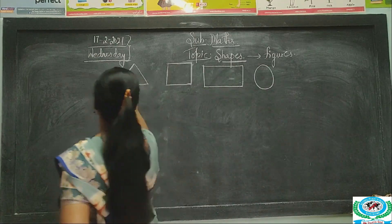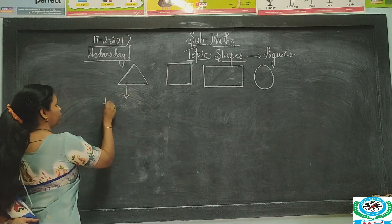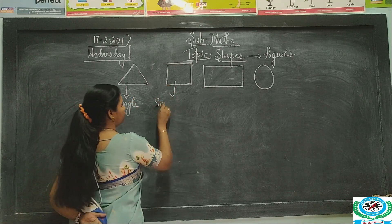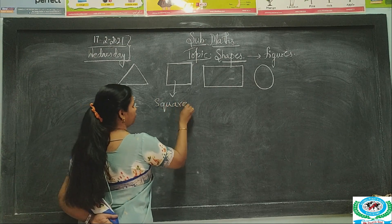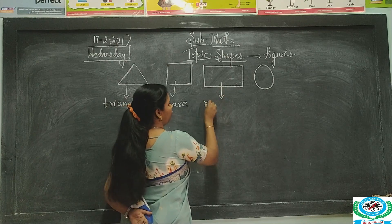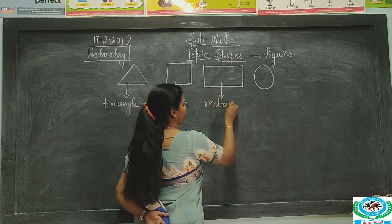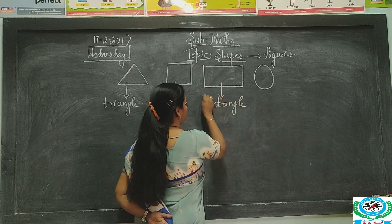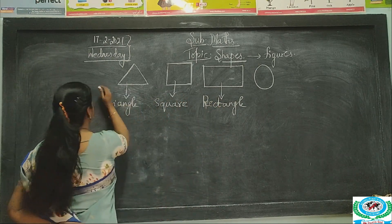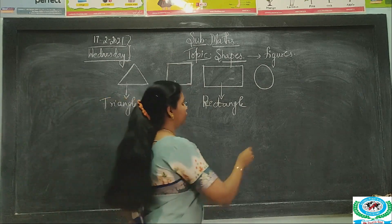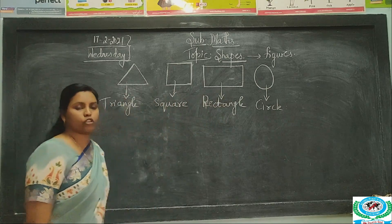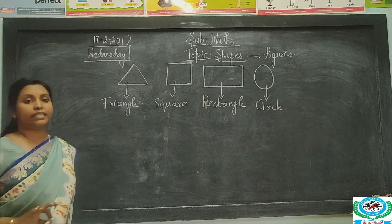This shape is called a triangle. This is called a square. And this shape is called a rectangle. And lastly, this is called a circle.